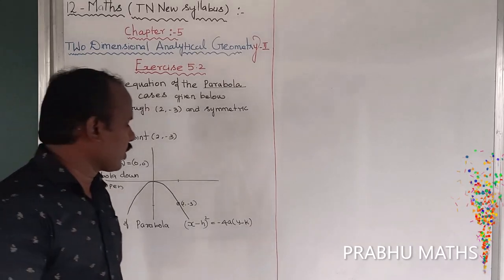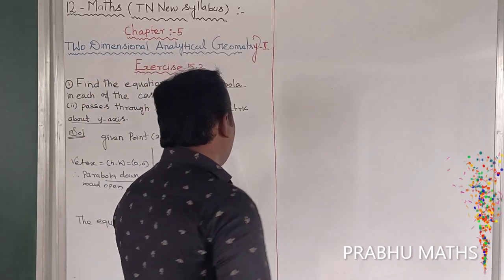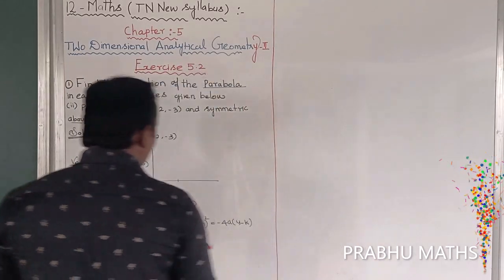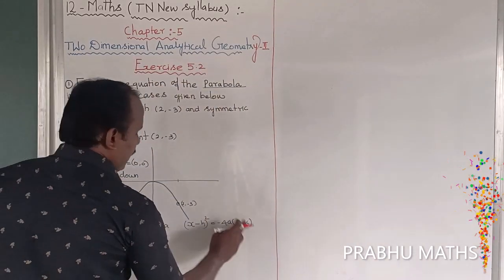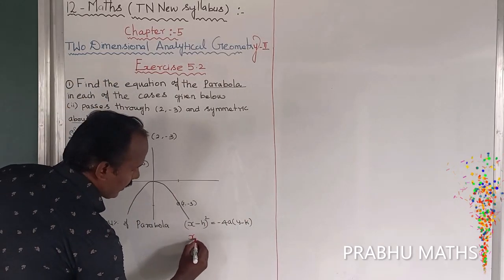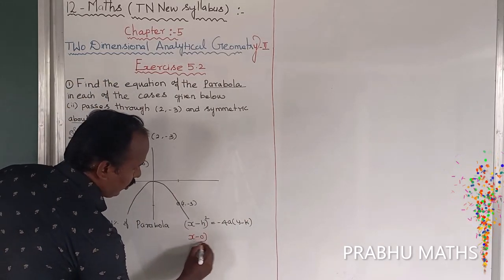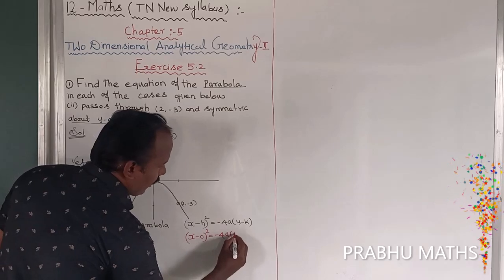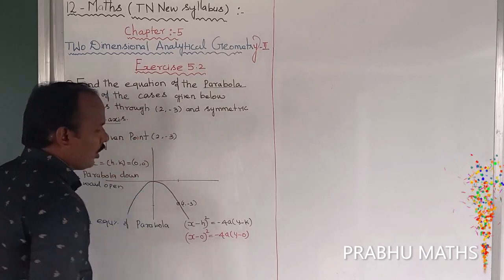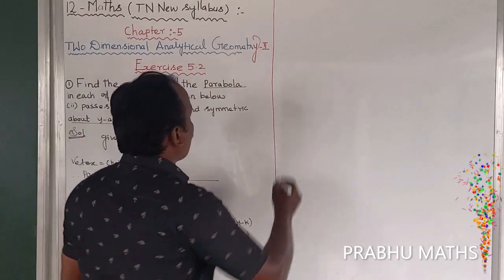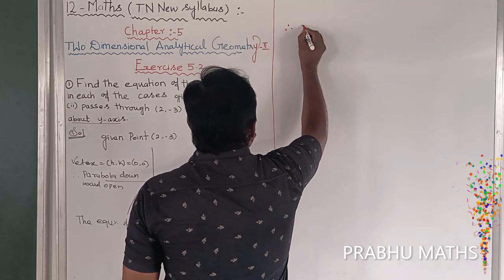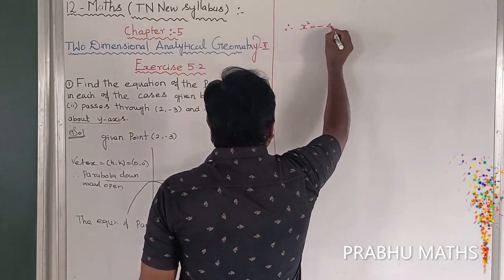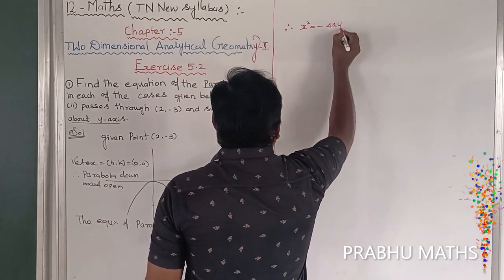For a downward open parabola: (x minus h) whole square is equal to minus 4a into (y minus k). Replace h and k with vertex values (0, 0): (x minus 0) whole square is equal to minus 4a into (y minus 0). Therefore, x squared is equal to minus 4ay.